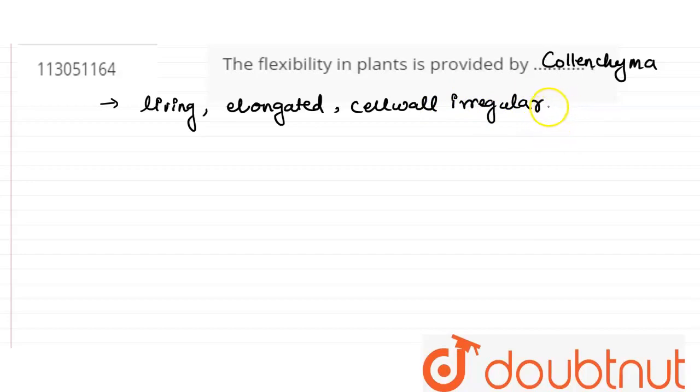And this irregularity you can see at the corners. What happens in the corners? It has a very unique structure that in corners these are very thickened. So this is the structure.